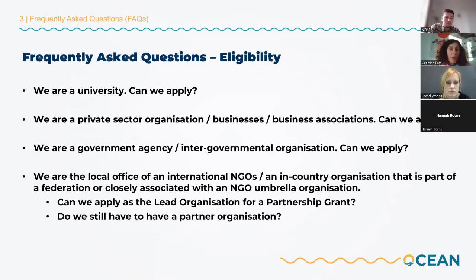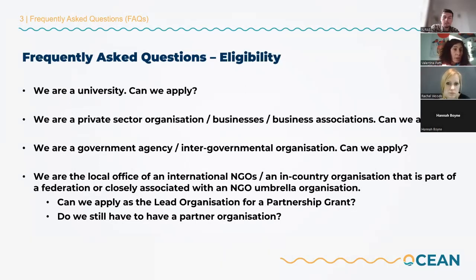If you are a private sector organisation, a business, or a business association, you can receive funding, but as a partner organisation — you cannot be the lead organisation. And in the case of partnership grants, you cannot be the only partner organisation, so you must have at least two partners, one of which is a private sector organisation, if you're choosing that composition.